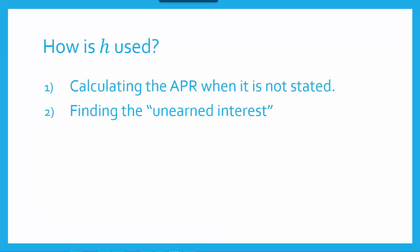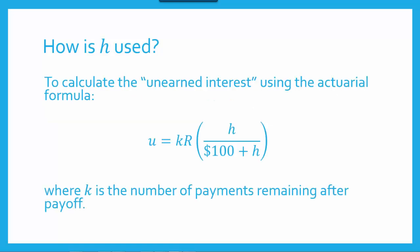So you might be wondering how H is used. It's used in a couple of different contexts. For example, it's used when calculating the APR when the APR is not stated — so let's say you borrowed $2,000 and you're told that you have to pay back $2,500 at the end of a certain amount of time, but you're not told specifically what annual percentage rate that represents. Another context, and the one that we're going to focus on, is finding the unearned interest, which is the amount of interest we're entitled to be reimbursed if the loan is paid off early. To calculate the unearned interest using the actuarial method, we're going to use the formula U = KR × (H / (100 + H)). We need the value of H in order to calculate the unearned interest.